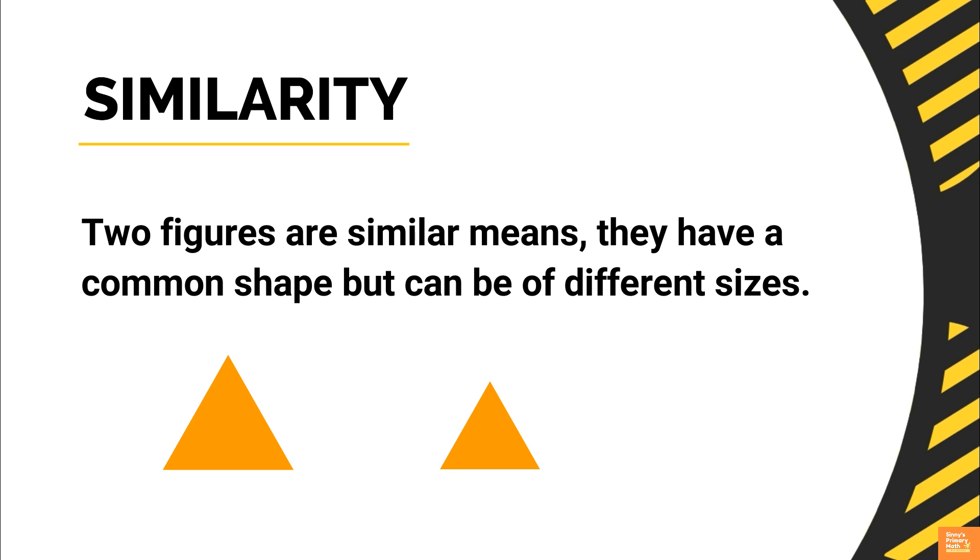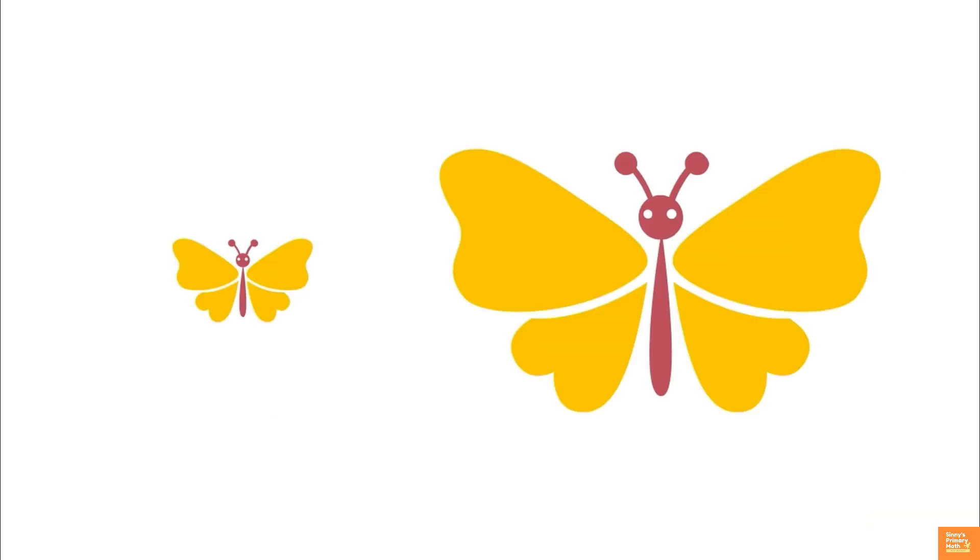For example, observe the picture of the butterflies. The butterflies have the same shape, but are different sizes. These two butterflies are similar. Similar figures are shapes that are relative to each other and they maintain the same properties in proportion to one another.